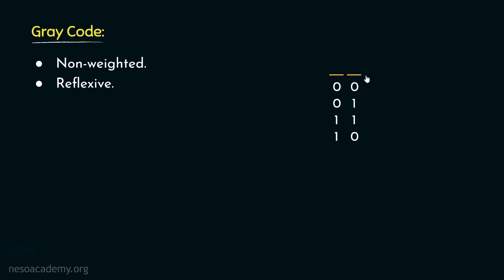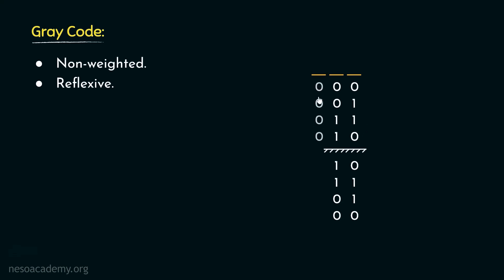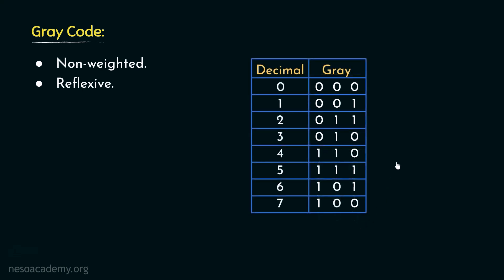Similarly, to generate all possible combinations with three bit places in gray, first except the MSB we mirror the rest of the bits. The bit places are mirrored as: 1, 0, 1, 0, 1, 1, 1, 0, 1, and finally 0, 0, 0, 0, 0. The upper portion is accompanied by all zeros in the MSB and the lower portion by all ones, giving us all different sequences possible with three-bit gray code.